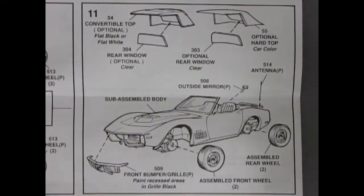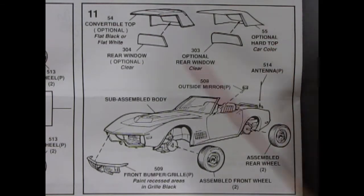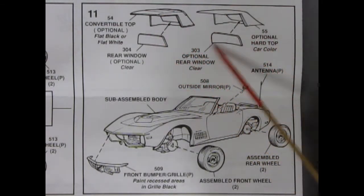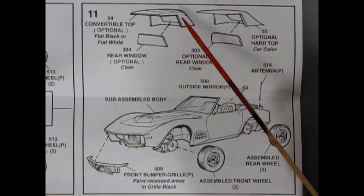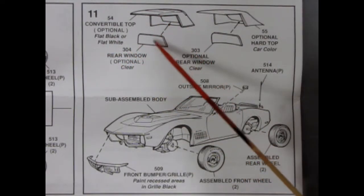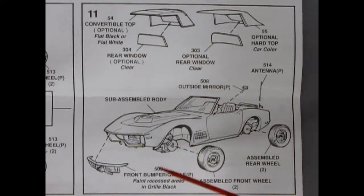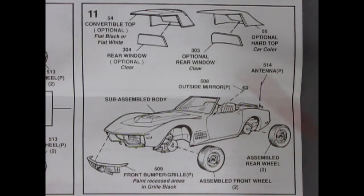And here we have step number 11. You do have optional top assemblies. And I do believe you get all the windows for them so you could build both and switch as you feel. So you have an optional hard top here, which is the car color. And the window goes in the back. And then you have the soft canvas convertible top. You can either paint it flat black or flat white and your window going in there. And then we have the 1971 bumper going into the front of the car.